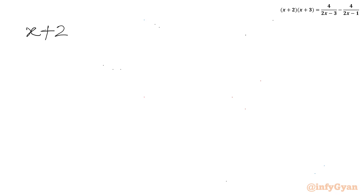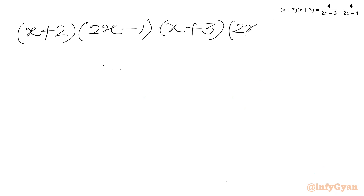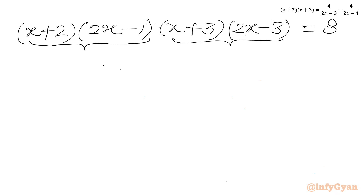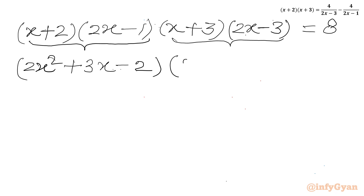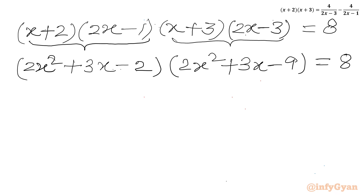I will rearrange the brackets from LHS and write (x+2)(2x-1) times (x+3)(2x-3) equal to 8. Multiplying these two brackets: x·2x - x + 4x - 2, and in the other bracket 2x² - 3x + 6x - 9, equal to 8. Now we have 2x² + 3x appearing in both brackets.